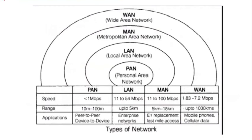A diagrammatic representation shows the progression from PAN — Personal Area Network — to LAN, MAN, and WAN. The ranges are: PAN is 10 to 100 meters, LAN is up to 5 kilometers, MAN is 5 to 50 kilometers, and WAN can go up to 1000 kilometers. Application-wise: PAN is device-to-device, LAN is for enterprises and organizations, MAN replaces miles-long assist lines, and WAN covers mobile phones and cellular data.